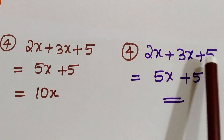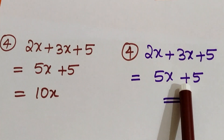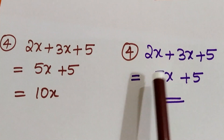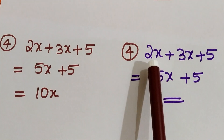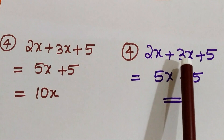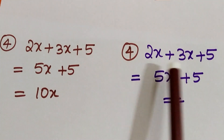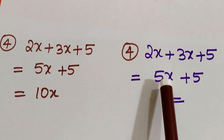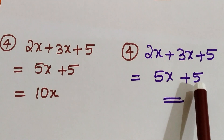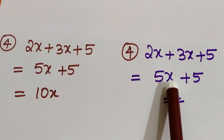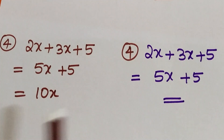2X plus 3X plus 5 can be expressed as 5X plus 5. We have to add only 2X plus 3X because they are like terms — they have X in common. So 2X plus 3X is 5X. We have to leave it as 5X plus 5, because 5X and 5 are not like terms. 5 is a number and 5X is a variable. We can't add a variable with a number. This is the correct procedure.